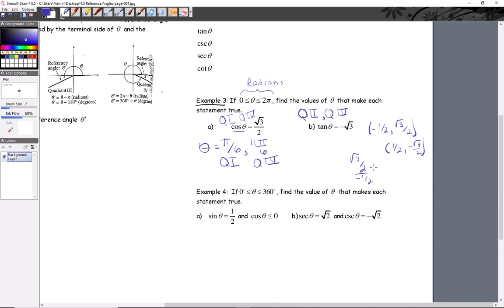Or you can switch the signs for the other one. That'll be radical three over two times negative two over one. And you can see cancel cancel and you get the target that you want. That'll be negative square root of three.